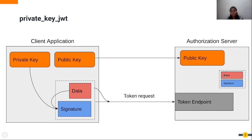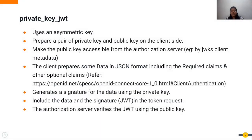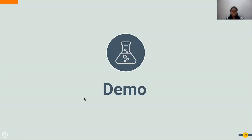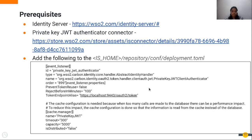Once the authorization server receives the data and the signature, it uses the public key to validate them. Once verification succeeds, the authorization server sends the token back to the client. To summarize: the client generates an asymmetric key pair, shares the public key with the authorization server, prepares the data in JSON format per OpenID specifications, generates a signature, sends the token request, and receives the access token in response.